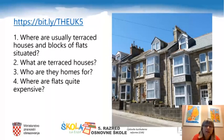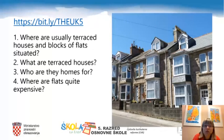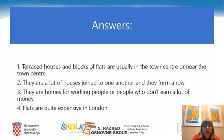And finally, the last video clip and the questions: Where are terraced houses and blocks of flats usually situated? What are terraced houses? Who are they homes for? Where are flats? Are they quite expensive? Please copy the link bit.ly/the-UK5 into your browser, watch the clip, find your answers and write them down. Terraced houses and blocks of flats are usually in the town centre or near the town centre. There are a lot of houses joined to one another and they form a row. They are homes for working people or people who don't earn a lot of money. Flats are quite expensive in London.